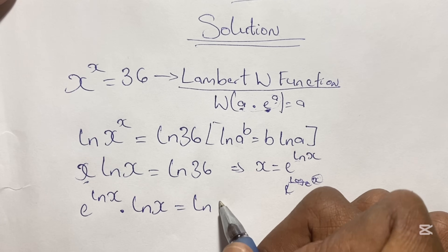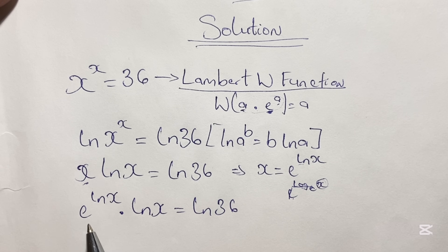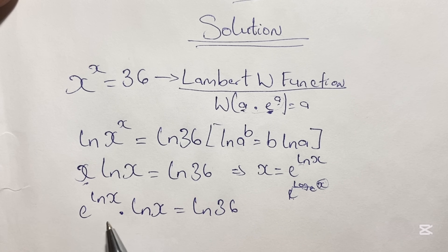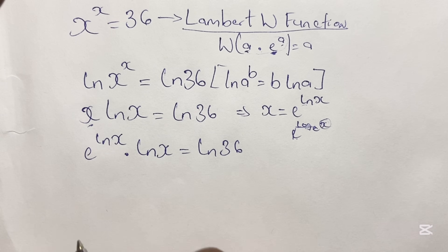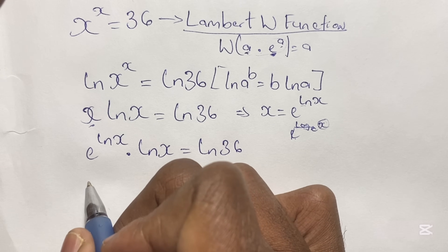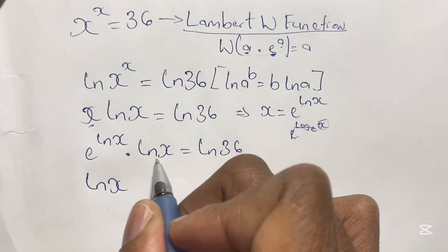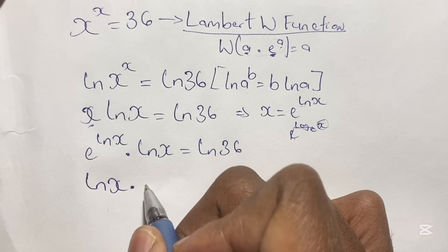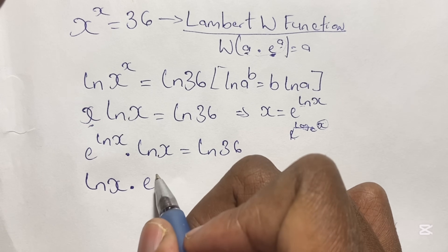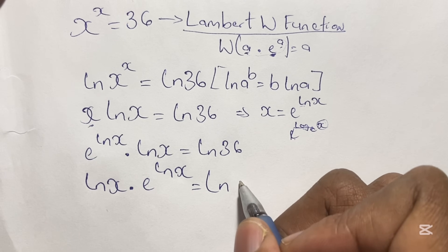So we have e to the power of ln x times ln x, which equals ln 36. Let's rewrite this with ln x first: ln x times e to the power of ln x equals ln 36.